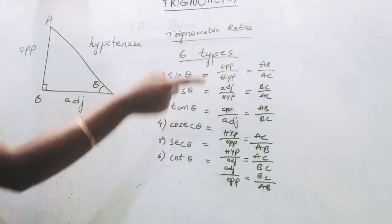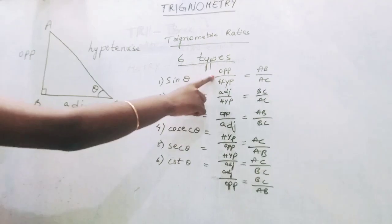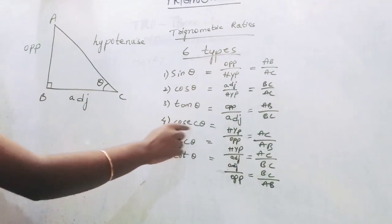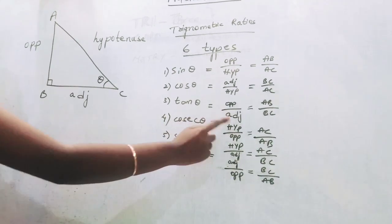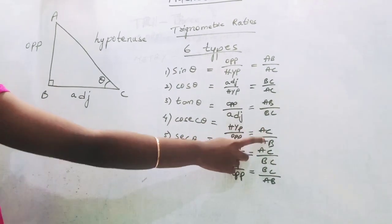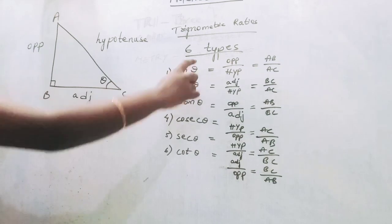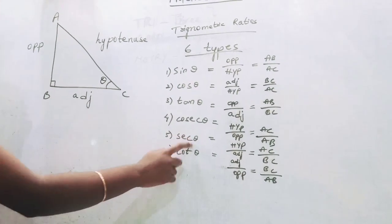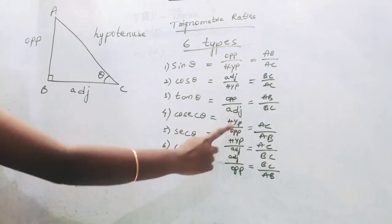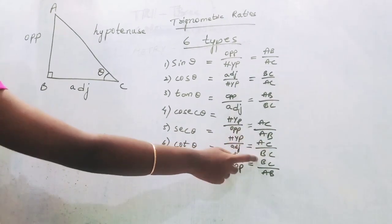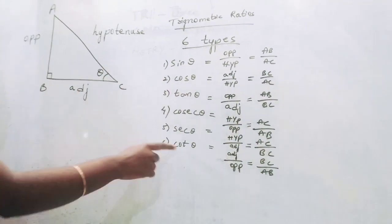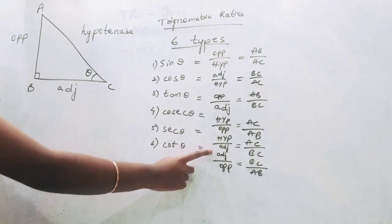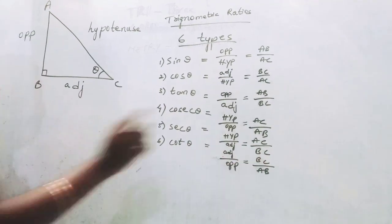Cosec theta is the reciprocal of sin theta. So if sin theta value is opposite by hypotenuse, then cosec theta value will be hypotenuse by opposite, that is AC by AB. Cos theta is the reciprocal of sec theta, so the value of sec theta will be hypotenuse by adjacent, that is AC by BC. Tan theta is the reciprocal of cot theta, so the value of cot theta will be adjacent by opposite, that is BC by AB.